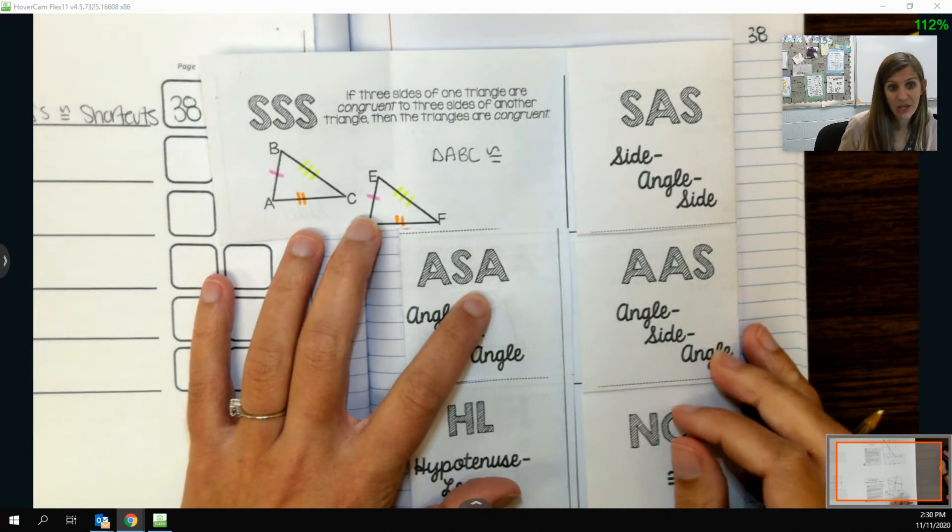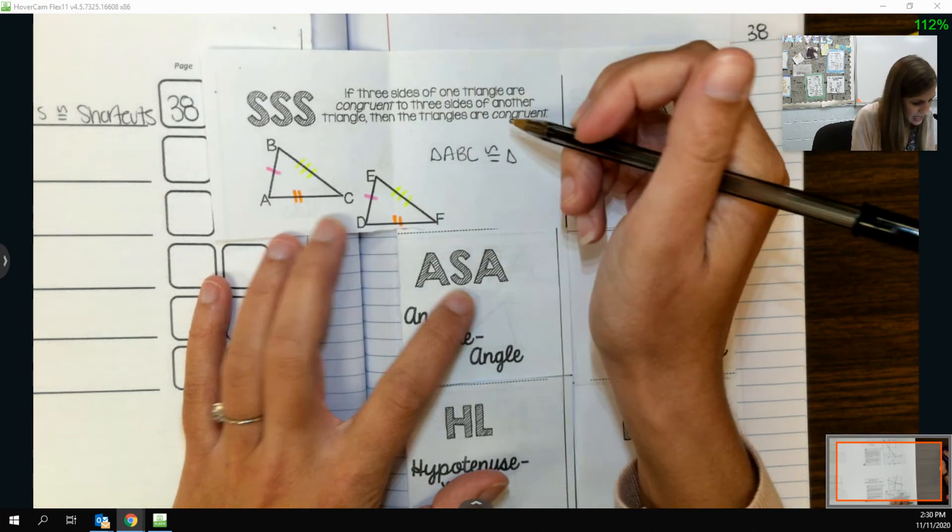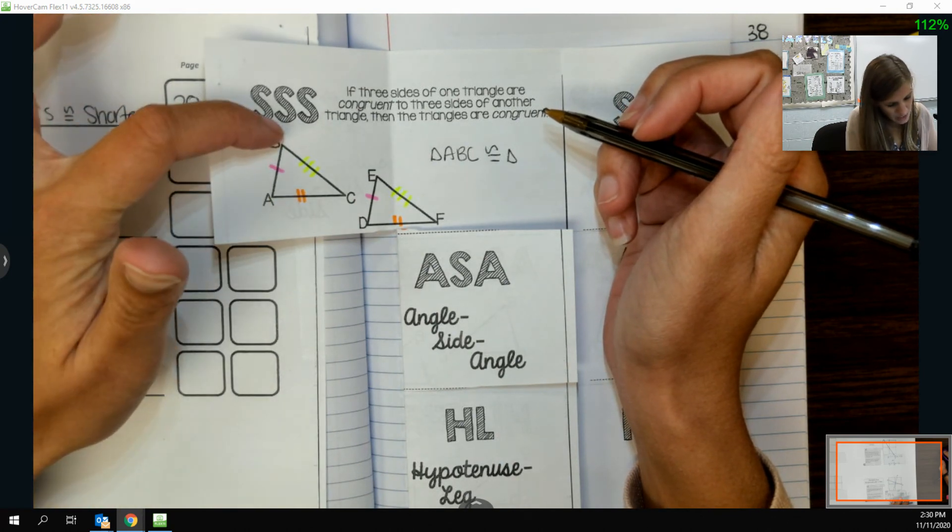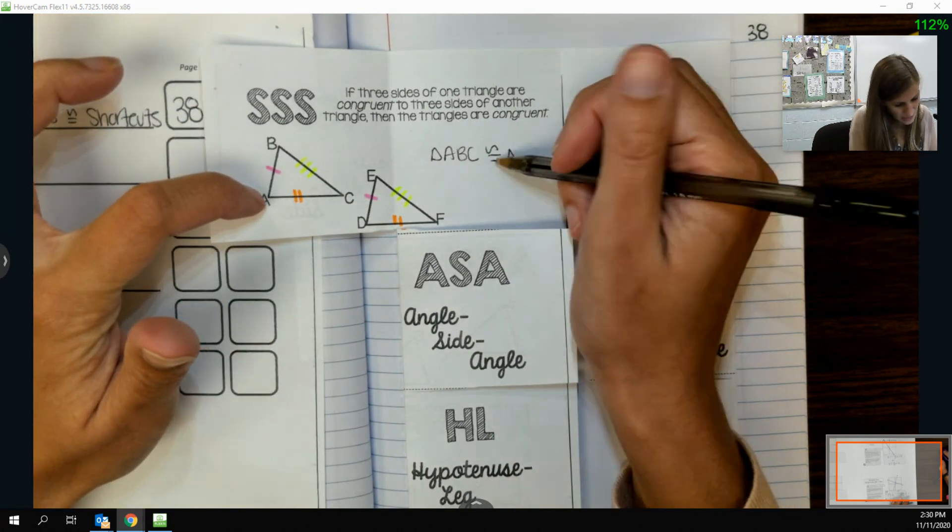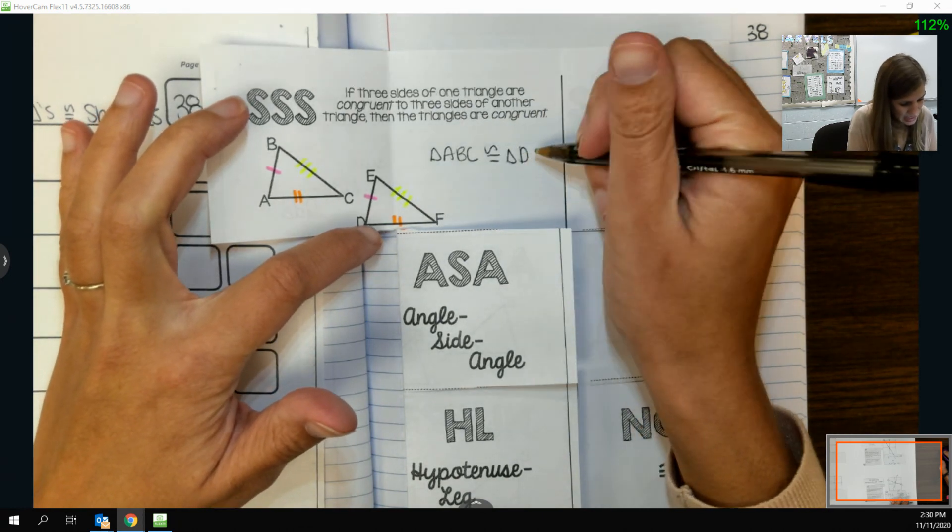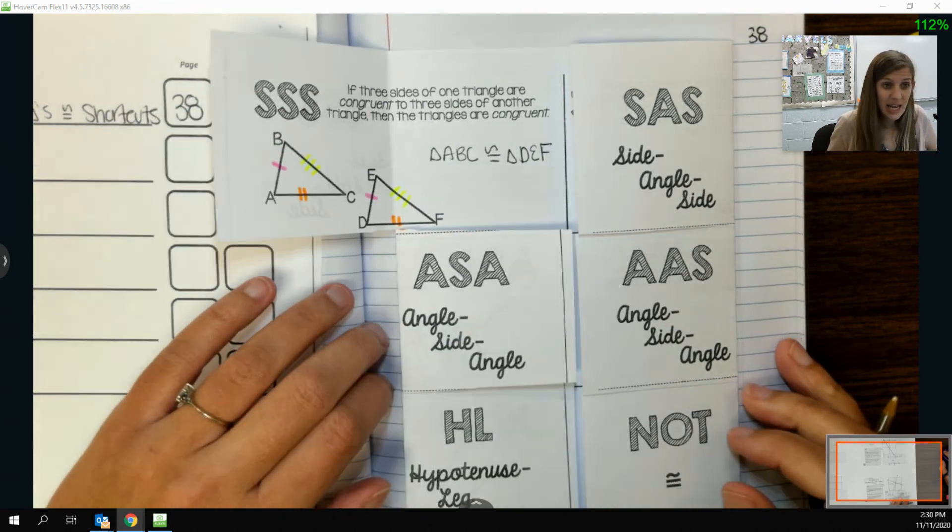Here's where we have to make sure that our congruent statement matches up appropriately. Since I've traveled from A to B to C, so I went across one and then three and then finished, I need to do the same thing here. So D to E to F.